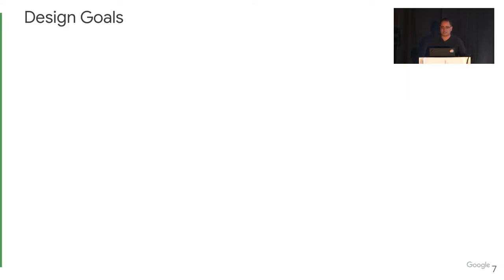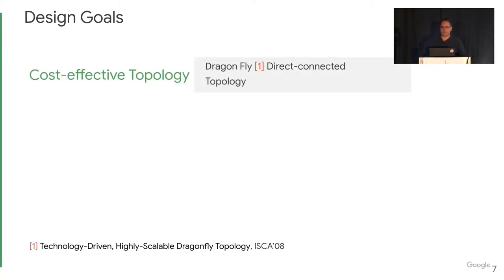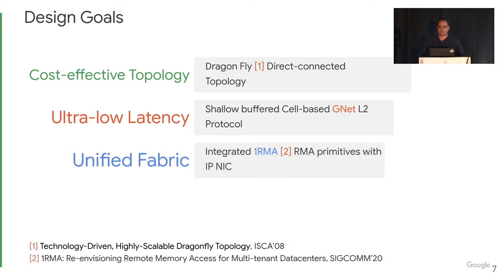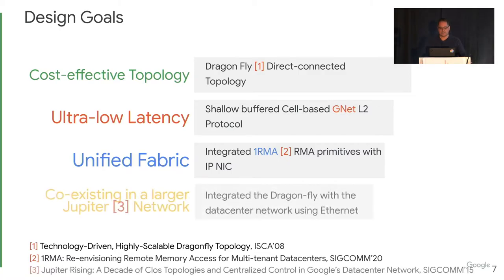I'm happy now to discuss our design goals and how we achieve them briefly. First, we wanted a cost-effective topology, so we selected the Dragonfly topology from the high-performance computing community, which is a direct connect topology. Second, we wanted ultra-low latency, so we opted for a cell-based L2 protocol that we came up with, which is shallow-buffered for low latency. Third, we wanted a unified fabric, so we added multiple protocol engines natively designed with GNET to the NIC. Lastly, we wanted to co-exist within the fabric, so this network connects to the rest of the fabric using Ethernet.